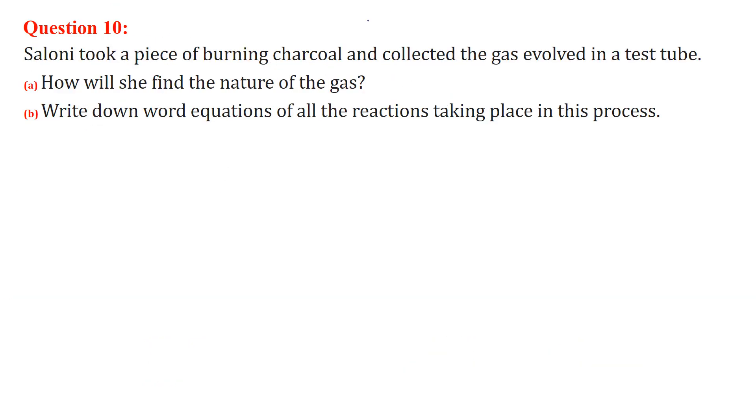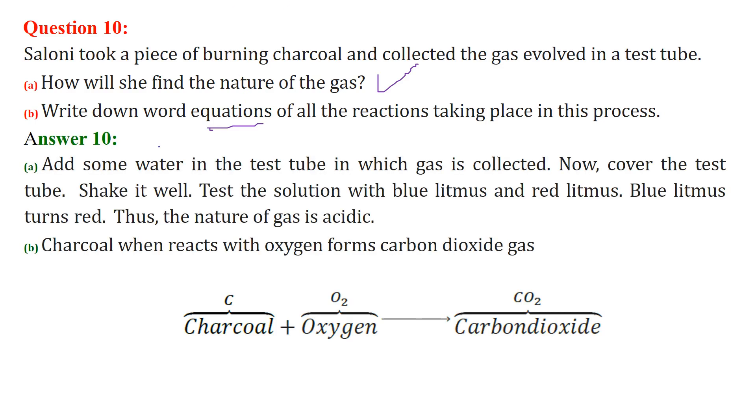Saruni took a piece of burning charcoal and collected the gas involved in a test tube. How will she find the nature of the gas? She needs to add some water in the test tube in which gas is collected. Now she can cover the test tube, shake it well and test the solution with blue litmus and red litmus. Blue litmus, if it turns red, then the nature of gas is acidic. And charcoal is basically carbon. The carbon when it reacts with oxygen O2, it forms CO2, carbon dioxide.